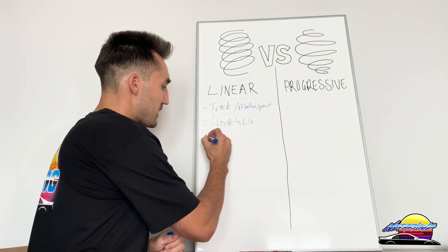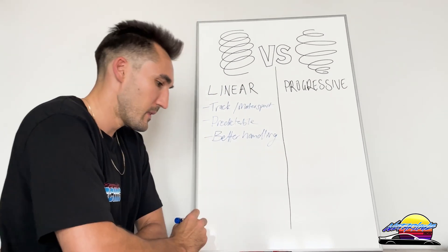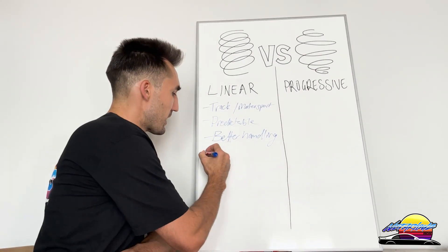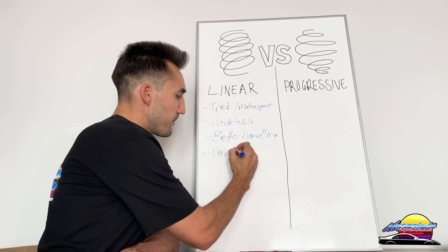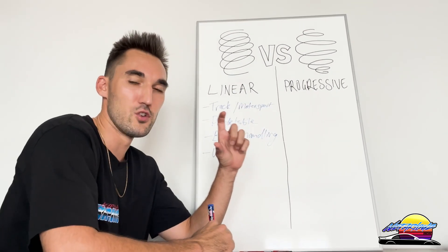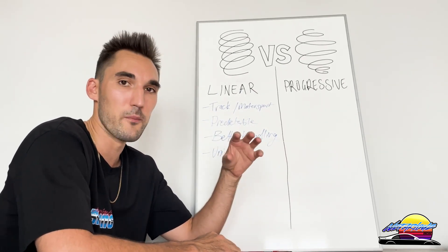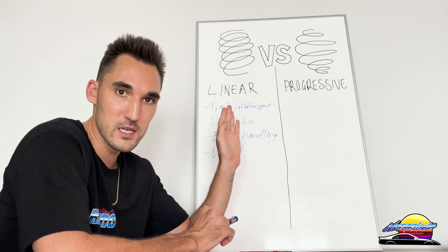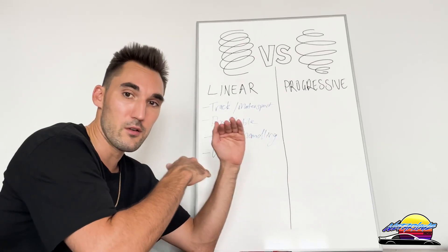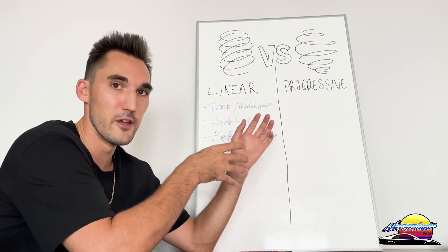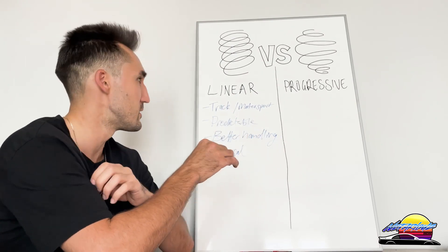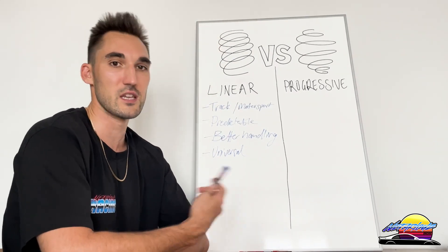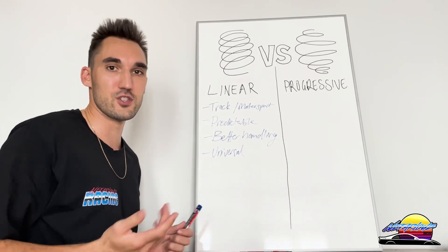That predictability makes for better handling, which is why linear springs are used for track and performance. The other thing with linear springs is they're pretty much universal and can be replaced. As long as you get the right diameter and right height to match your setup, you can get different spring rates and just swap them out. You need to be aware of whether your dampers can handle the new spring rates, but strictly talking about the springs themselves, you can buy a replacement spring of the same height and diameter and it'll fit. So for example, if you're changing to Swift springs or want a stiffer spring rate, you can just swap them out.